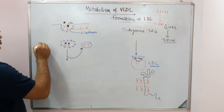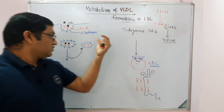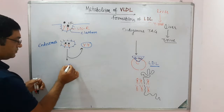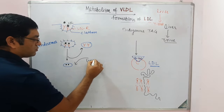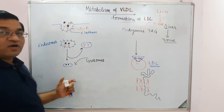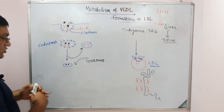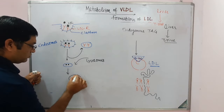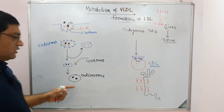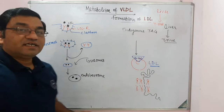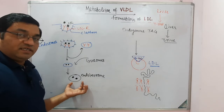The internalized structure after clathrin shedding is known as an endosome. The endosome containing LDL particles fuses with primary lysosomes to form endolysosomes. This endolysosome contains the LDL and causes degradation of cholesterol and cholesterol esters present inside the vesicle.